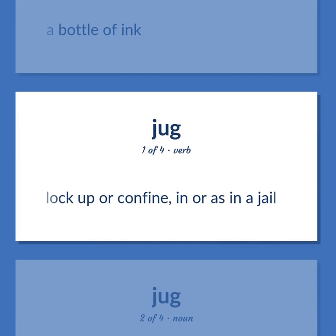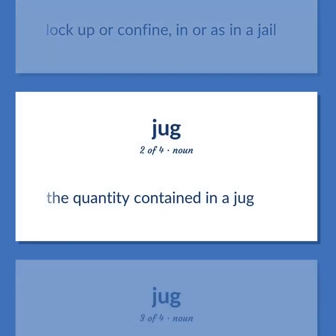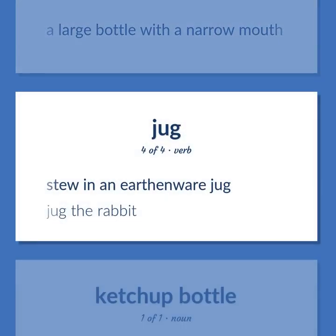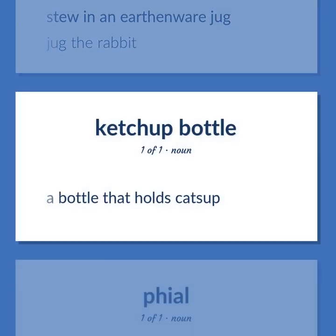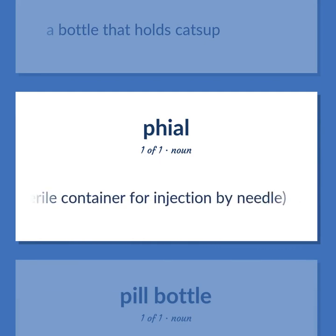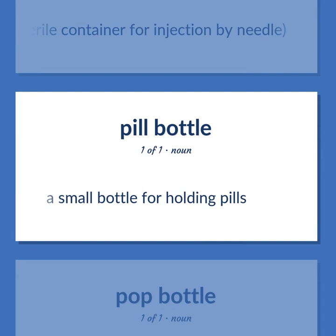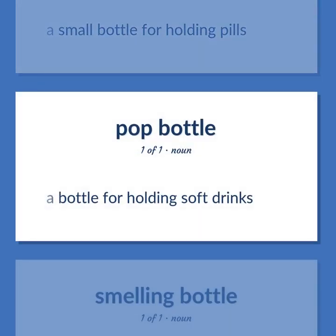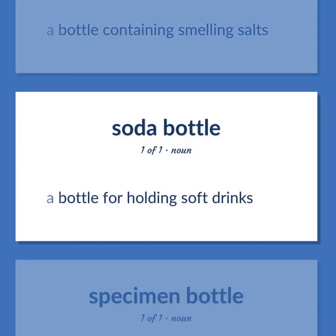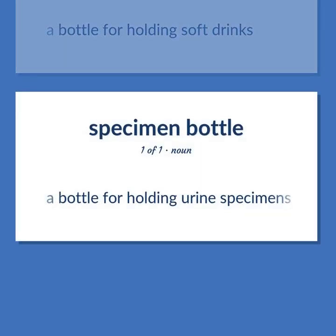Lock up or confine, in or as in a jail. The quantity contained in a jug. A large bottle with a narrow mouth. Stew in an earthenware jug. Example: Jug the rabbit. A bottle that holds catsup. A small bottle that contains a drug, especially a sealed sterile container for injection by needle. A small bottle for holding pills. A bottle for holding soft drinks. A bottle containing smelling salts. A bottle for holding soft drinks. A bottle for holding urine specimens.